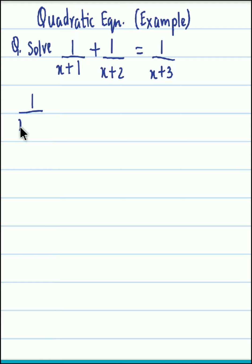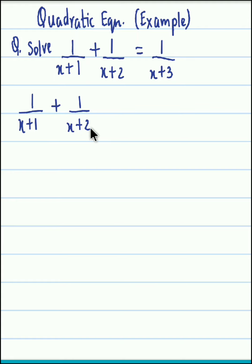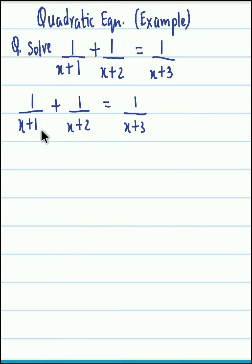We have 1 upon x plus 1, plus 1 upon x plus 2, equal to 1 upon x plus 3. On the left hand side we equalize the denominators, so we put this in brackets to make things easier.